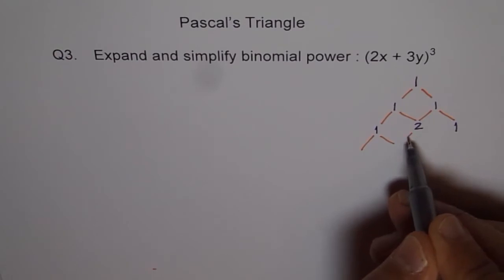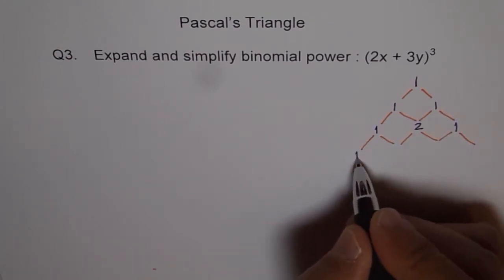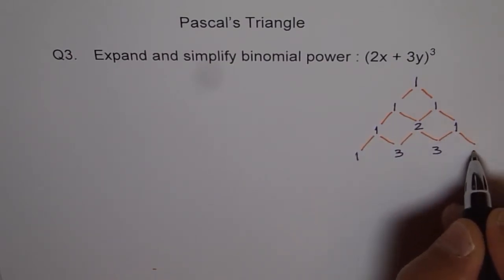So third row, we make it here, combining these two and we get 1 here, 1 plus 2 is 3, 2 plus 1 is 3 and 1.